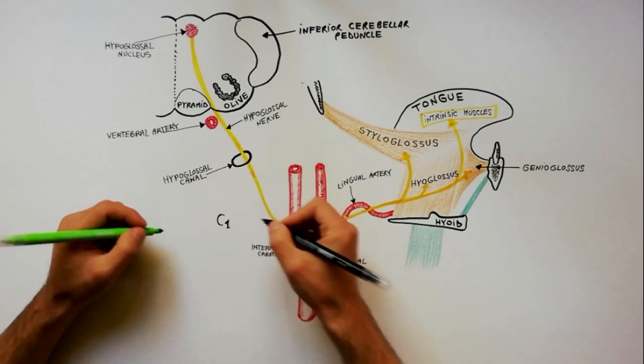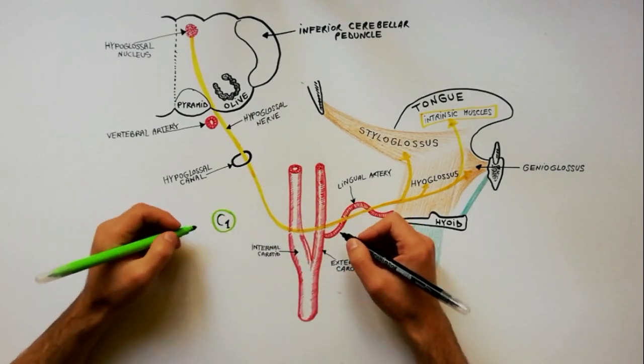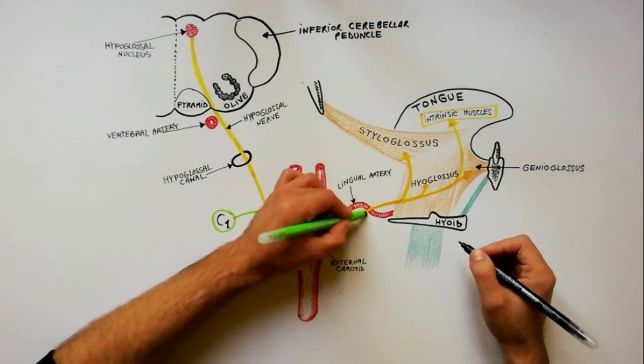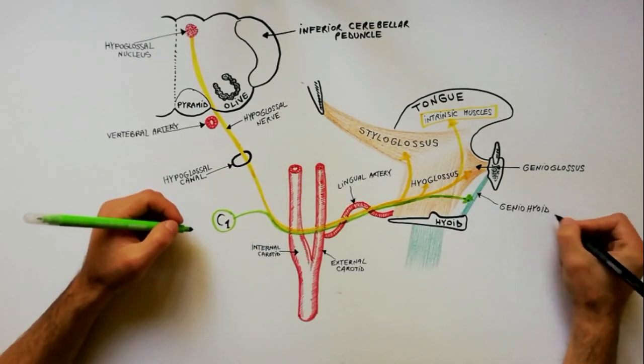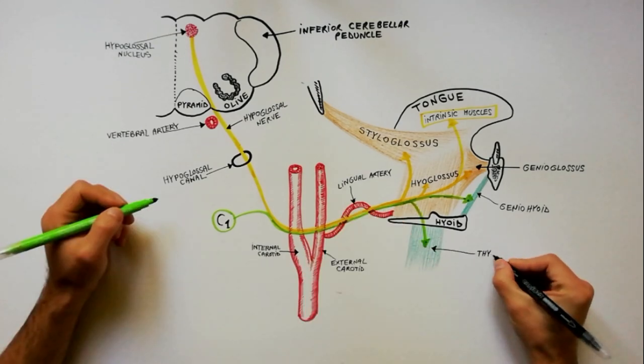These fibers travel along the hypoglossal nerve to supply the geniohyoid muscle and the thyrohyoid muscle.